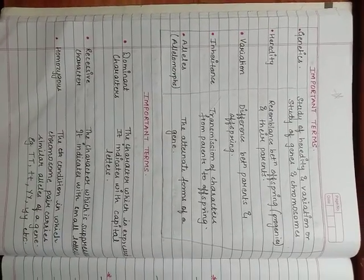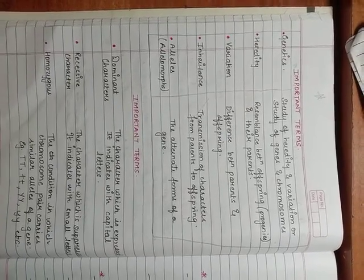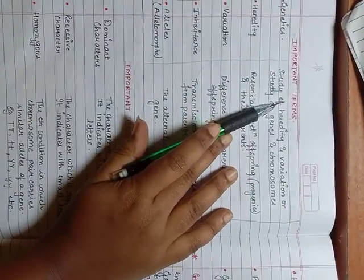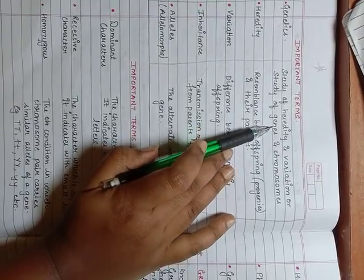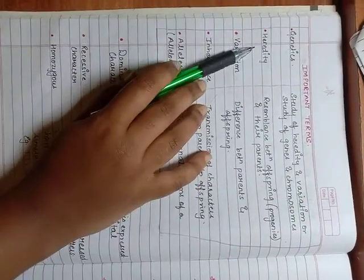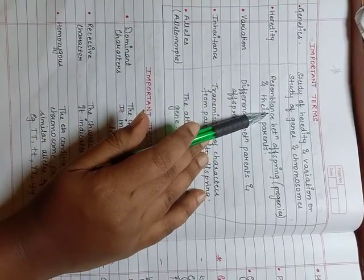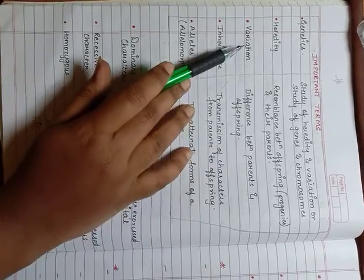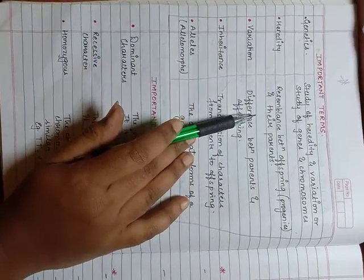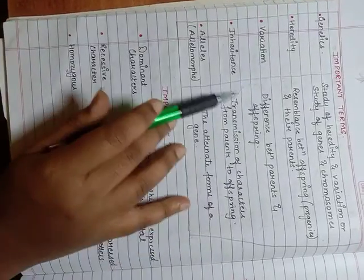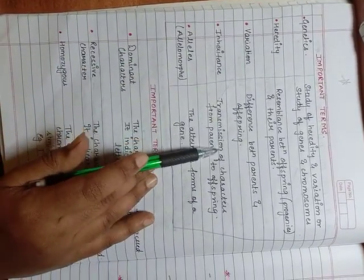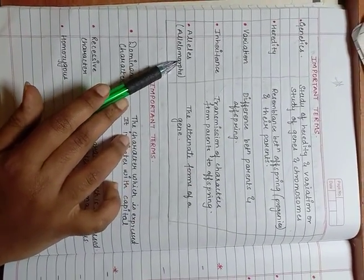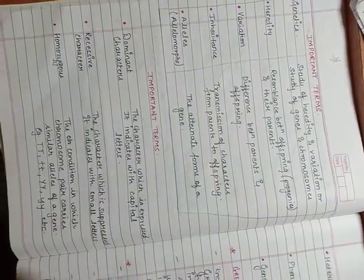Let us look into some of the important terms which will be there in this chapter. First is genetics. Genetics means the study of heredity and variation or the study of genes and chromosomes. Now what is meant by heredity? Resemblance between offspring, that is the progenies, and their parents. What is meant by variation? Difference between the parents and the offspring. Inheritance means the transmission of characters from the parents to offspring. What is meant by alleles or allelomorphs? The alternate form of a gene.